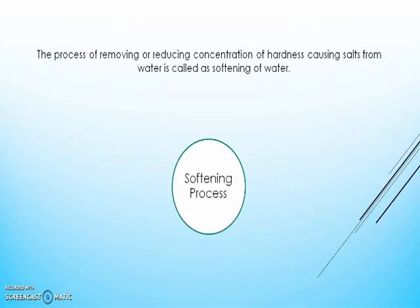Let's first see what is meant by softening of water. It is the process of removing or reducing the concentration of hardness causing salts from water. We learned that mainly salts of calcium and magnesium are responsible for producing hardness in water. So the process used to remove such hardness causing salts from water is called the softening process, and the water we get after this process is called soft water.